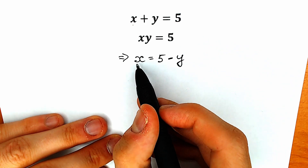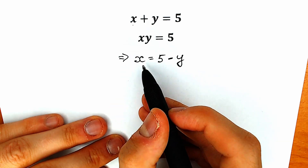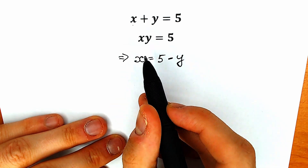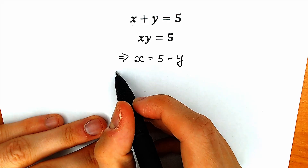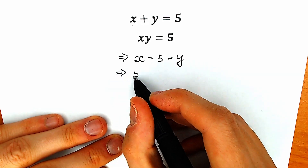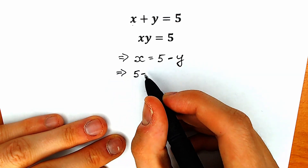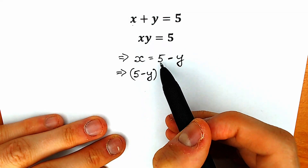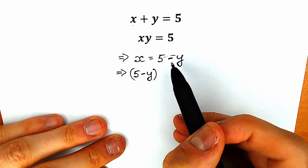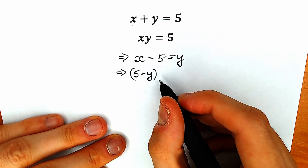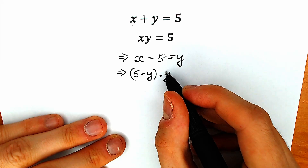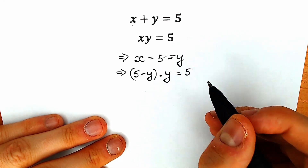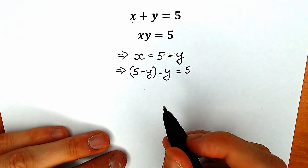Right now, let's plug in this x from the first equation. Instead of x, let's plug in 5 minus y into the second equation. So as a result we have (5 minus y) times y, equal to 5.